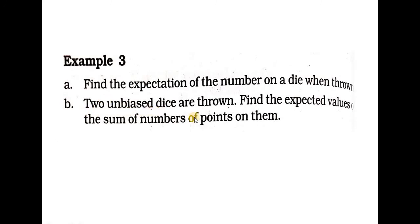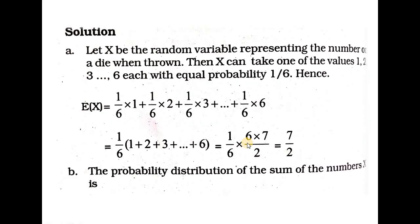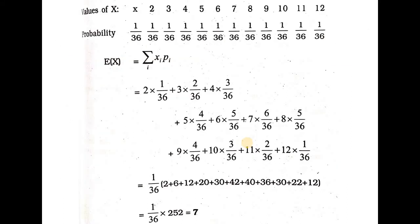Now for the second problem: two unbiased dice are thrown. We consider the sum of the two values. If one die shows values 1 to 6 and the other also shows 1 to 6, the minimum sum is 2 and the maximum sum is 12.